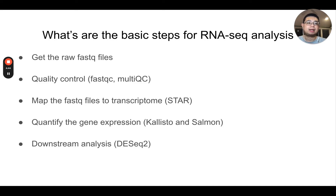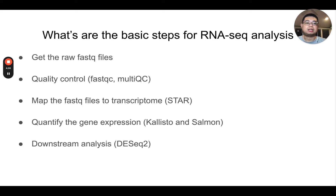Salmon and Kallisto are much faster and also turn out to be more accurate. I actually recommend you use Kallisto or Salmon for any RNA sequencing quantification. For downstream analysis of differential gene expression, you will use the DESeq2 tool, which is one of the most popular tools for downstream differential gene expression analysis.